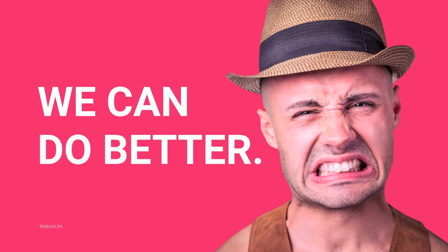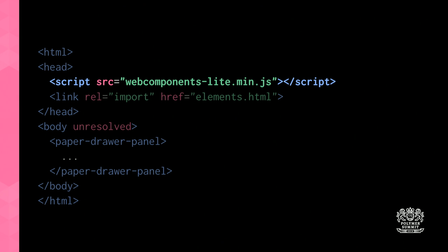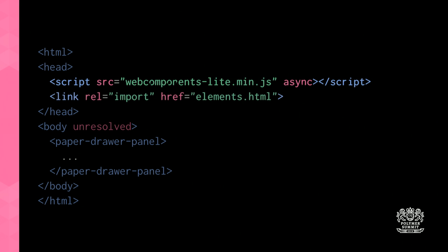This setup is easy to reason about, but we can do better. That script tag for the polyfill blocks rendering right from the get-go. On a slow connection, you're already degrading performance. We should put async on that tag so it won't block rendering. Similarly, HTML imports block rendering by default — until elements.html loads, none of the markup will show. We can pop an async attribute on the import too, so nothing in our head is blocking the page.